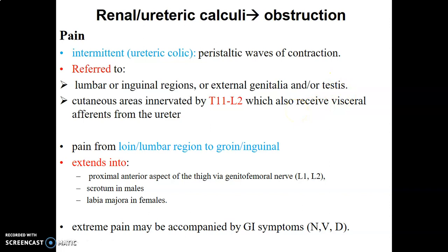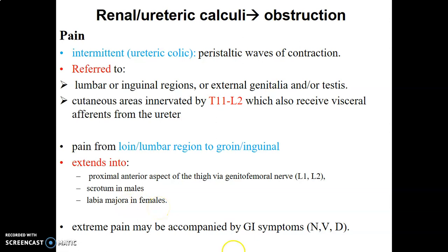A patient with ureteric colic will complain of pain over these dermatomal regions, telling you the pain comes from the lumbar region or loin and goes downwards towards the groin or inguinal region. The pain also extends to the anterior aspect of the thigh because the genitofemoral nerve carries L1 and L2 fibers; it spreads to the scrotum and labia majora. This pain is usually very extreme and may be accompanied by gastrointestinal symptoms such as nausea, vomiting, and diarrhea.